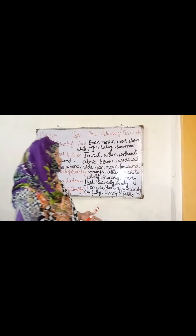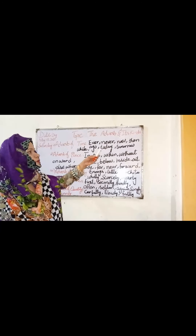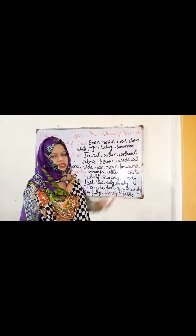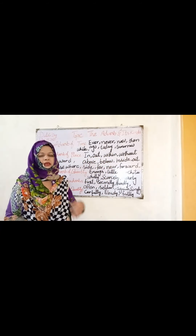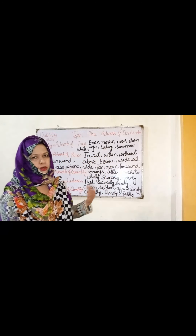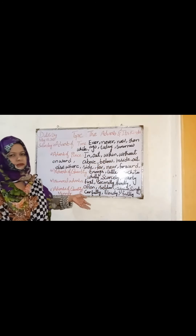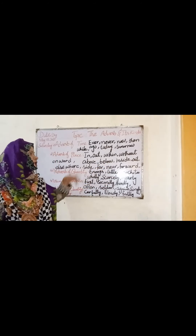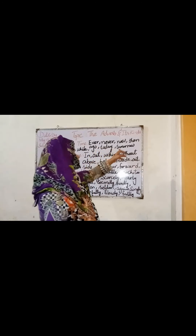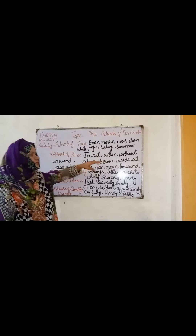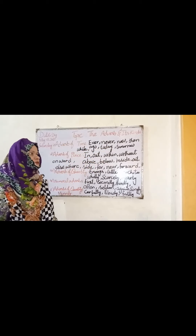Examples of adverb of time include: then, a while ago, today, tomorrow. For example: I will go to the park today, tomorrow, or tonight, in the evening. These words — while ago, today, tomorrow — are used to mention adverb of time, indicating when the action takes place.